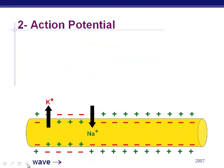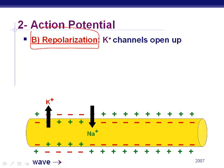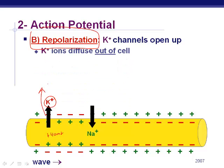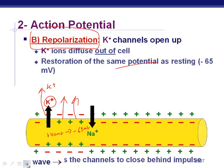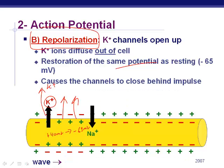Next, the neuron gets repolarized. Right now it's at plus 40 millivolts inside. As the sodium continues moving forward, it causes potassium channels to open up. Potassium then leaves the cell — those positives go back out — and this restores the resting potential of minus 65 millivolts. Once all that potassium leaves, it brings the charge back to minus 65. Right behind the action potential, the channels begin to close again.